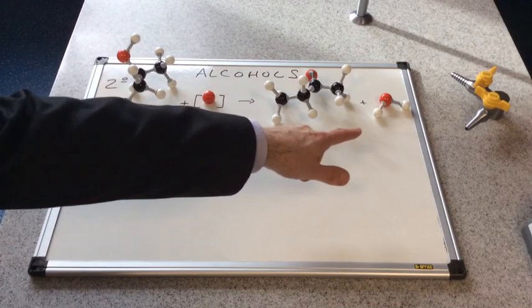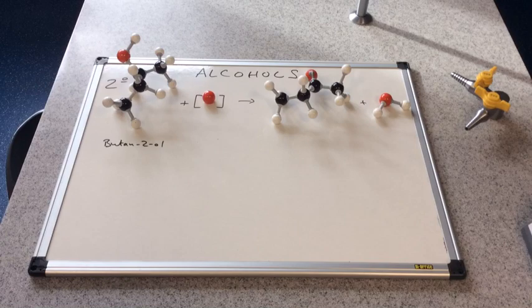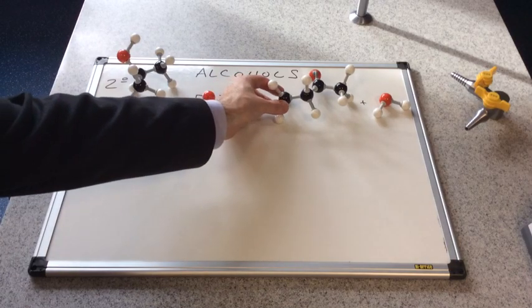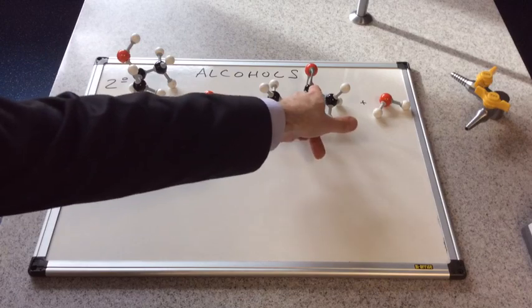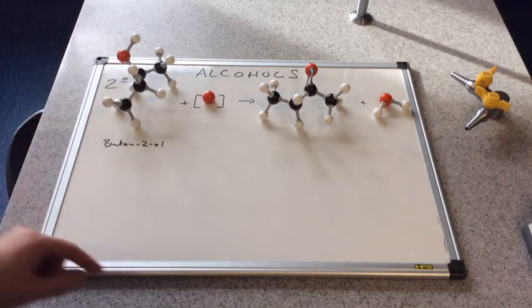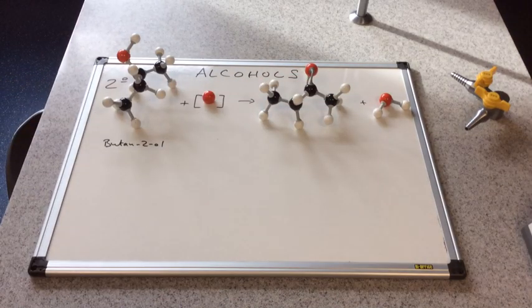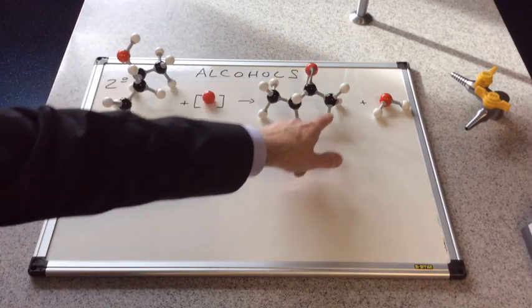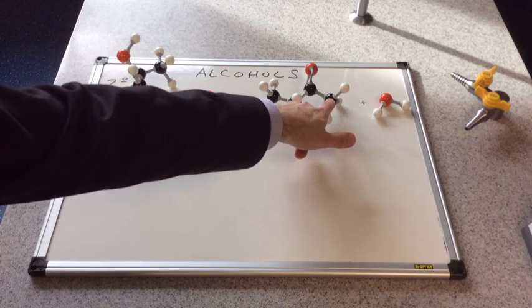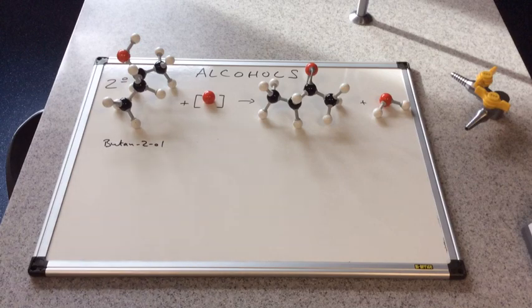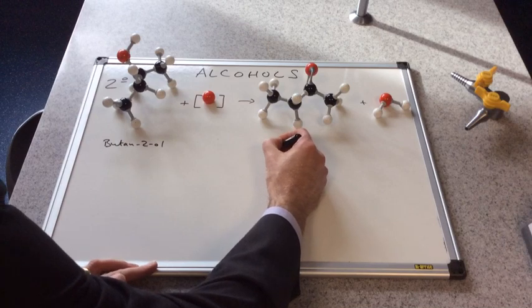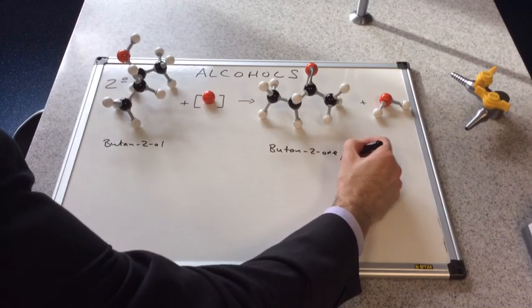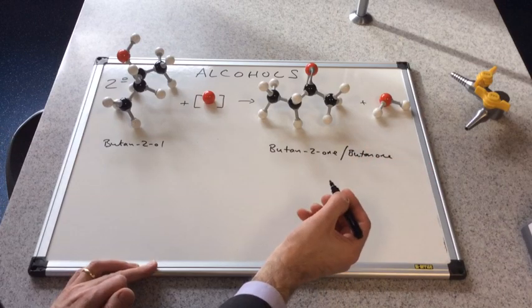If you have a look at the products there, there's one similarity: we've made some water. The organic product is a bit different now. We've formed this C double bond O on this carbon here, the carbon that had the OH on. This is not an aldehyde. Aldehydes occur when the C double bond O is on the end carbon, which means that the other atom attached to the carbon is a hydrogen. So this is actually a ketone, and this one is called butan-2-one, or butanone.